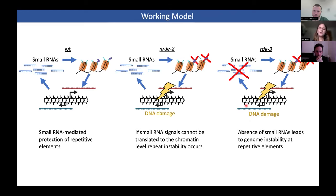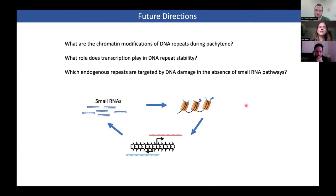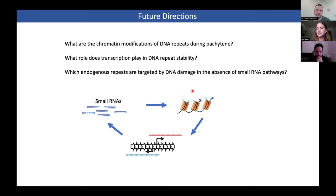This is our working model, and we still have a couple of questions to answer. For example, we want to know exactly what are the chromatin modifications of these repeats during packaging, what role transcription plays during this process, and which endogenous repeats are targeted by DNA damage in the absence of small RNA pathways.